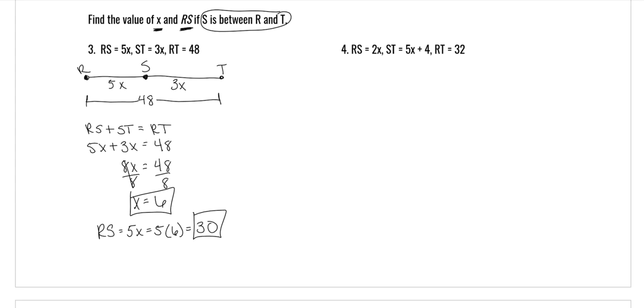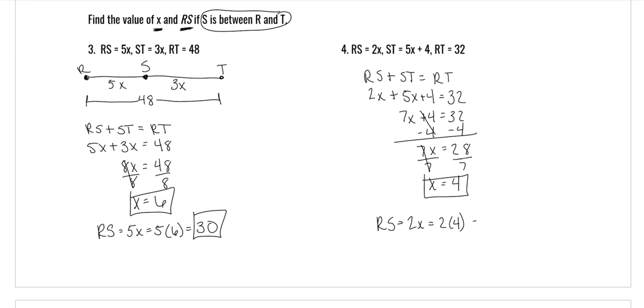So again, I'm not necessarily going to redraw when the picture is going to be the same. And you draw the picture so that you can do this part, so that you can write the formula. That's one of the hard parts of geometry is coming up with that formula. So draw it so that you can. RS is 2x, ST is 5x plus 4, and RT is 32. Combine like terms, 5x plus 2x is 7x. Subtract 4 on both sides. 7x is equal to 28. Divide by 7. And x is 4. And then we also need to find RS, don't forget. Which is 2x or 2 times 4, which means RS is 8.